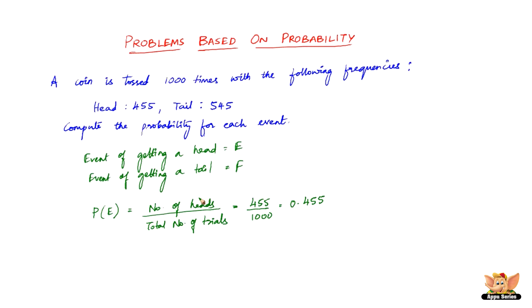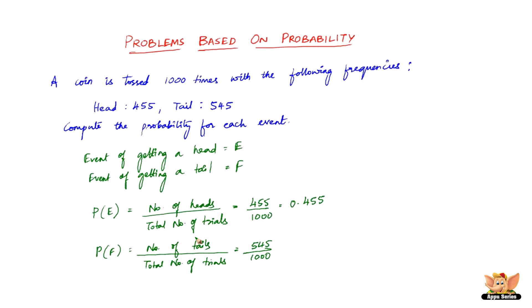Now let us find the probability of the event of getting a tail, that is the probability of event F. That is the number of tails divided by the total number of trials. The number of tails is 545 divided by 1000, which is 0.545. So the probability of event F is 0.545.